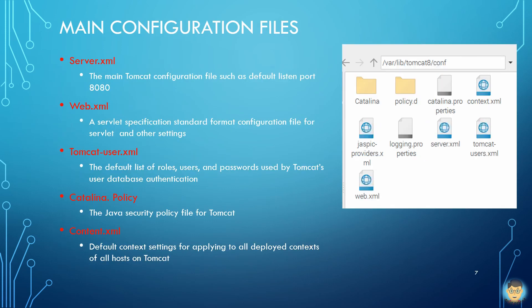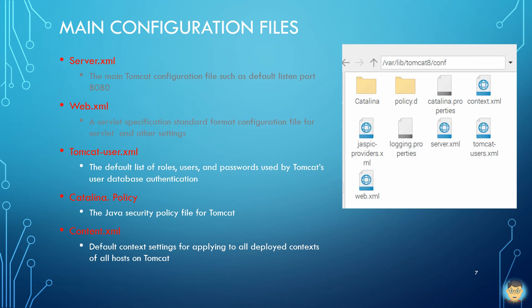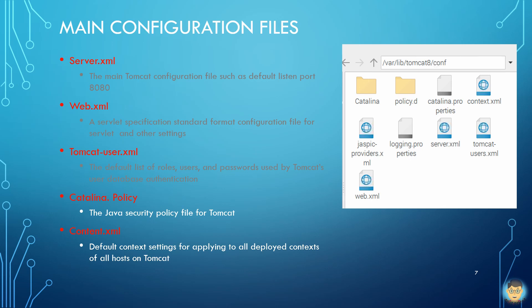In the configuration folder, five basic configuration files are introduced. The server.xml file is the main Tomcat configuration file, such as the default listen port 8080. The web.xml file is a servlet specification standard format configuration file for servlets and other settings. The tomcat-users.xml file is a default list of roles, users, and passwords used by Tomcat's user database authentication.